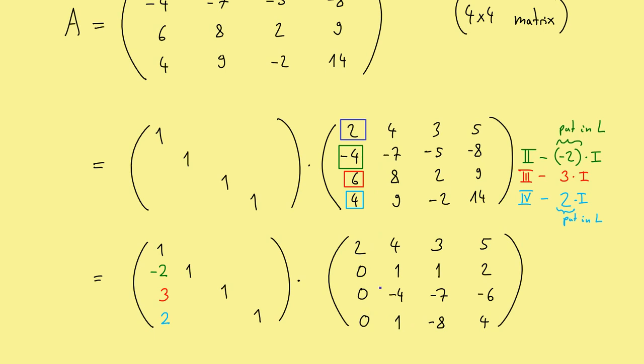Well now we are finished with our first column, because everything is zero here. Now we go to our next column, so the second column, which means this is our new pivot. So the procedure would be exactly the same. We now just produce the zeros here.